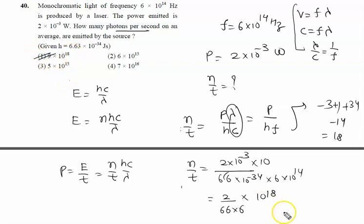Now we have to check between 15 and 16. Let's try 15 first. 2×10^15 will leave 10^3, so it becomes 2000×10^15/(66×6). Solving this, when you calculate, it equals 5.05×10^15.